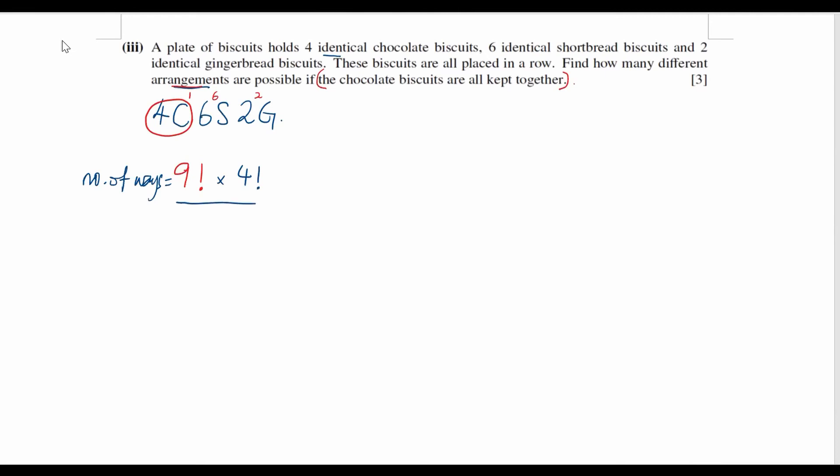And now we have to consider those identical objects. We need to consider the number of ways caused by the identical objects, the repeated ways. Now we are trying to get rid of those repeated ways. Which is 4 chocolate biscuits identical divided by 4 factorial, and multiply with 6 shortbread biscuits identical and 2 gingerbreads identical. And we can see that these would cancel off each other. And hence using calculator, we can find out the number of ways.